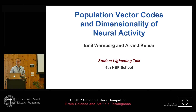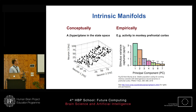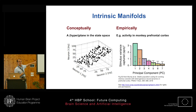So what is dimensionality? Well, imagine you're recording from a set of neurons and then at each time point you will have one point in a space where each axis is the activity of one neuron. So it's the state space of the activity.